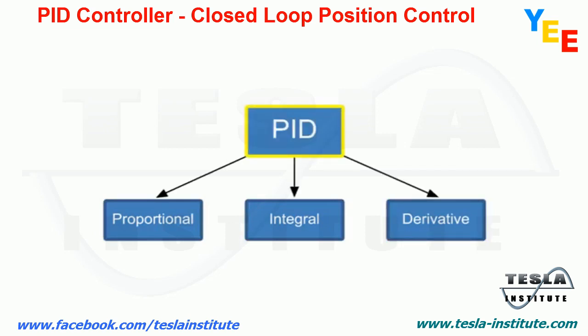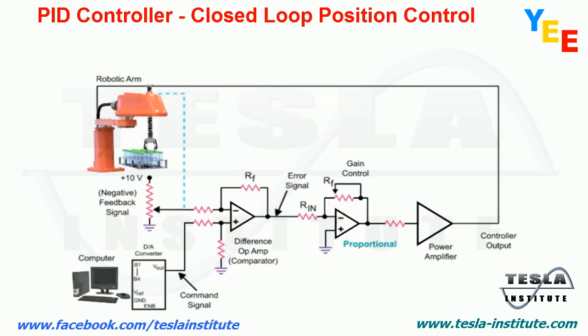The operation of PID mode control is demonstrated in the following robot arm position circuit. To move the robotic arm to a specific position, a command signal from the computer starts the motion sequence.